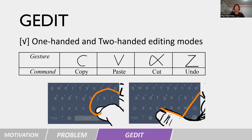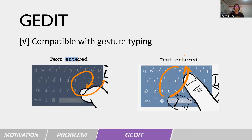We assign those gestures to mimic the shortcuts on the keyboard. Because the editing gestures originate from the edge, they are compatible with gesture typing. We also constrain the starting area of the ring gesture within the space key to make it compatible with gesture typing as well.